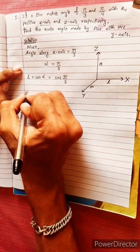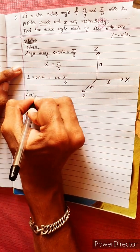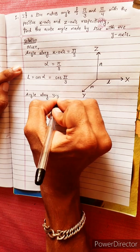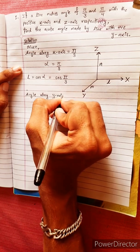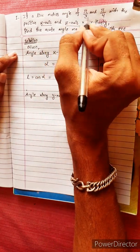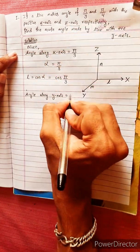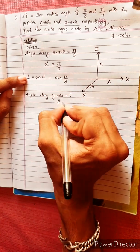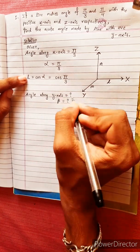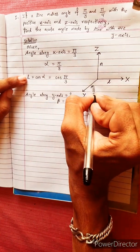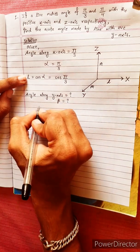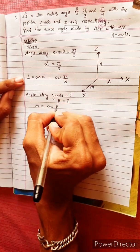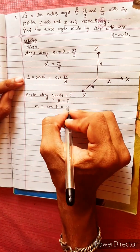The angle along the y-axis will represent beta. Beta equals to what — that is what we need to find. The y-axis will represent the direction cosine m, where m equals cos beta equals to what?